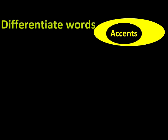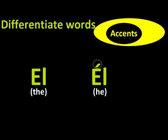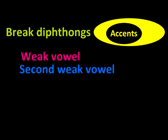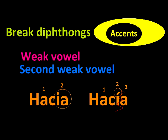Second, accents help us to differentiate words that are written the same way. So for example, we write él and el so that we don't confuse them in a written text, even if both words are actually pronounced the same way. And three, they break diphthongs. Do you remember them? I hope so. Well, if a strong and a weak vowel, or two weak vowels are together, but we want to pronounce them separately, we have to write an accent on the weak vowel or the second weak vowel. So for example, it's not the same to say hacia and hacía.